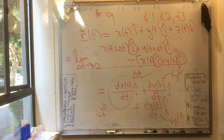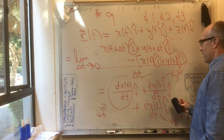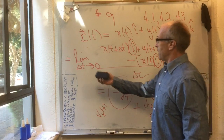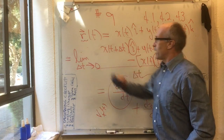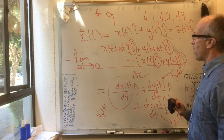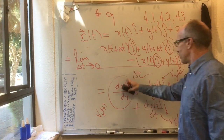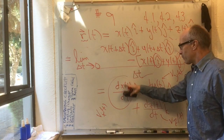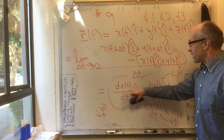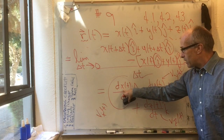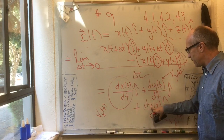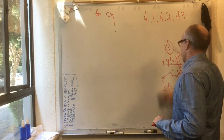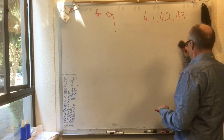So what we have learned is that in order to get the velocity vector from the position, all you have to do is differentiate each of the three functions: x of t, y of t, and z of t. Let's go on to the acceleration.